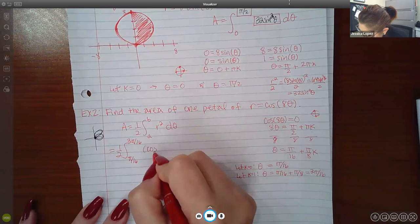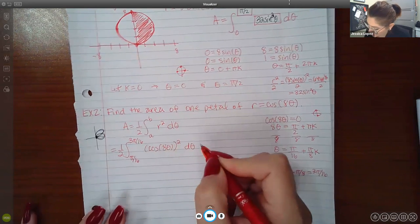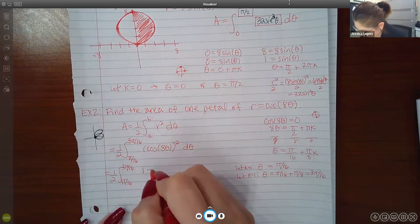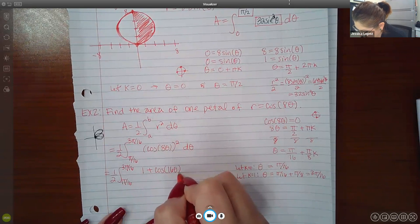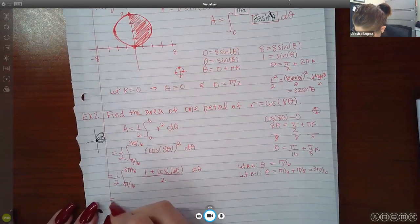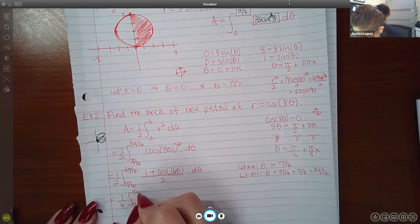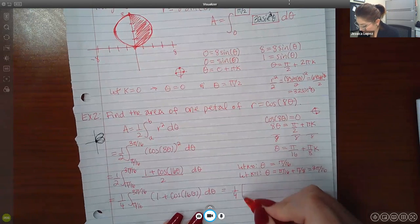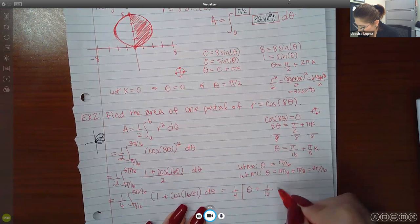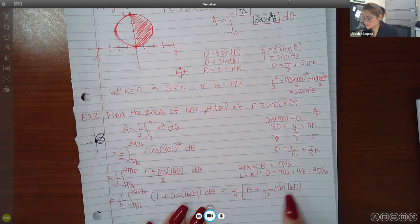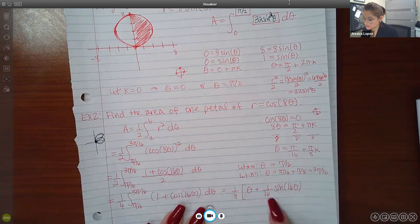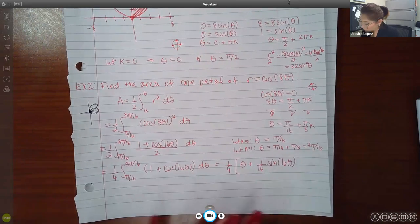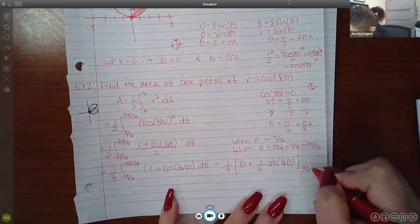Then r is cosine of eight theta squared d theta. So I'm actually going to convert that since it is cosine squared. We have to use the power reducing formulas. Remember that from chapter eight. So this is going to be one plus cosine of double the angle, so 16 theta over two. I can kick this two out with the one half in the front, and I will have this integral over two. Then if I want to integrate each term individually, I will get theta plus one over 16 sine of 16 theta.